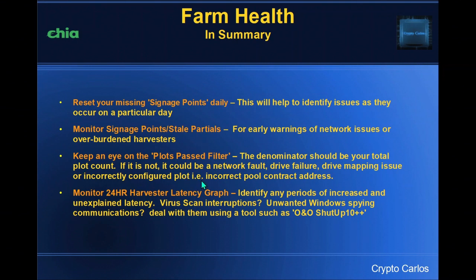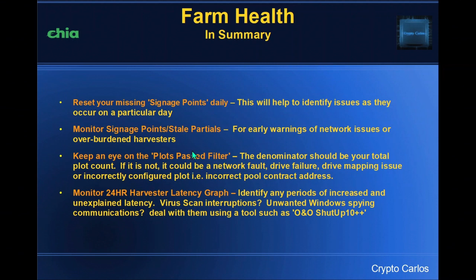Keep an eye on the plots pass filter — that denominator should be your total plot count. If it's not, it could be a network fault, drive failure, drive mapping failure, or an incorrectly configured plot. What happened to me was that somehow an incorrect pool contract address entered my configuration and I started plotting using the command line. That resulted in me creating some plots that weren't recognized by my harvester machine — even though I thought they'd been added to the farm, they actually hadn't. What resulted was that I wasn't seeing my overall daily XCH earnings rise in conjunction with that.